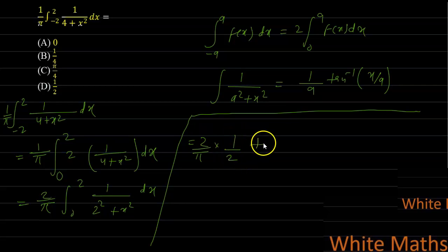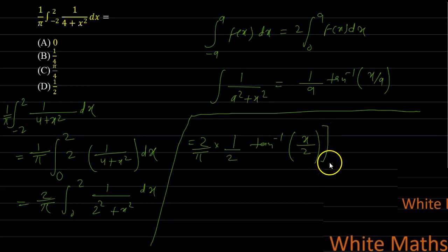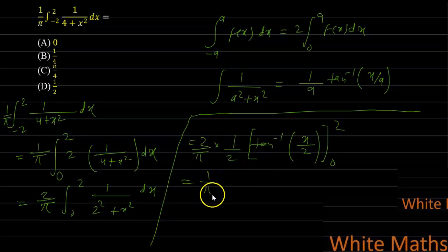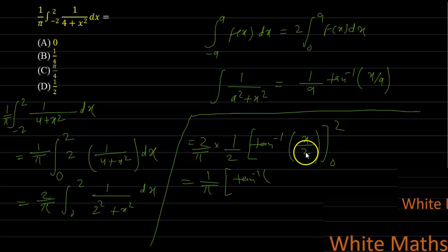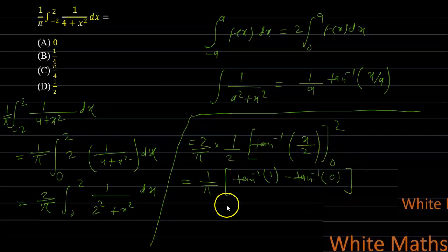The 2 and 2 cancel out, leaving (1/π) with the limit applied: tan⁻¹(2/2) minus tan⁻¹(0/2), which equals (1/π) times [tan⁻¹(1) minus tan⁻¹(0)].